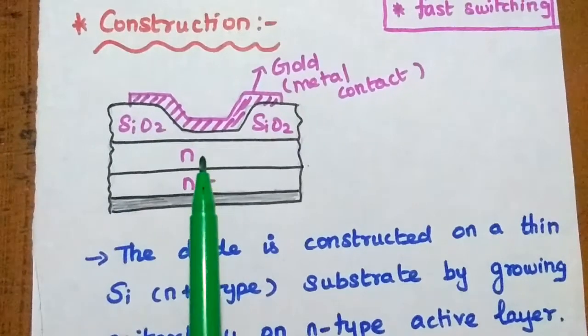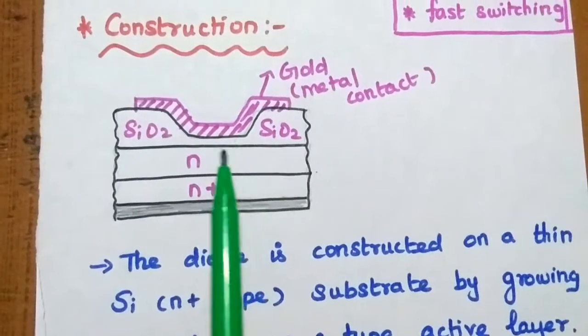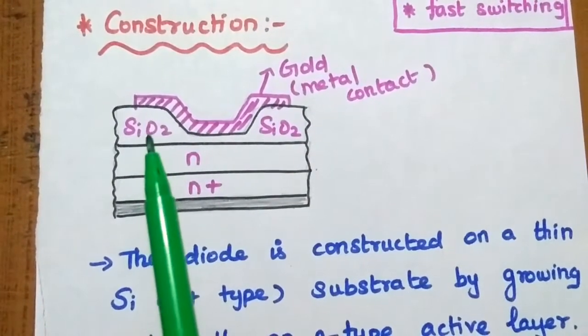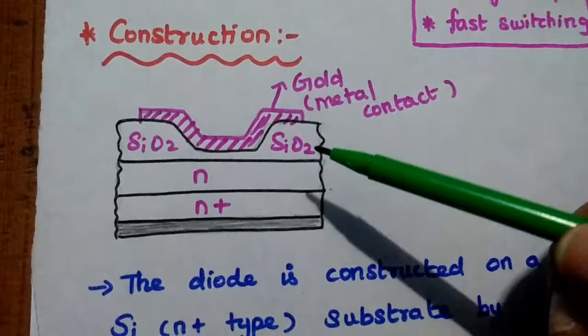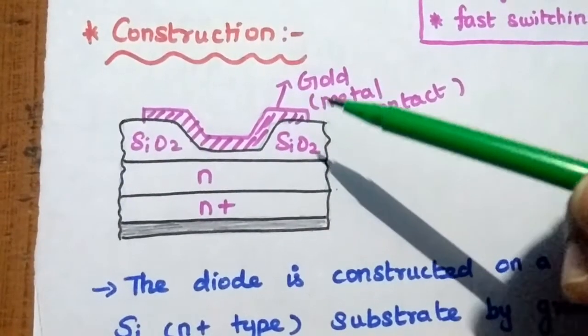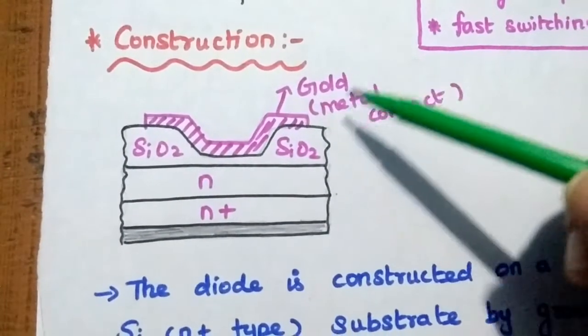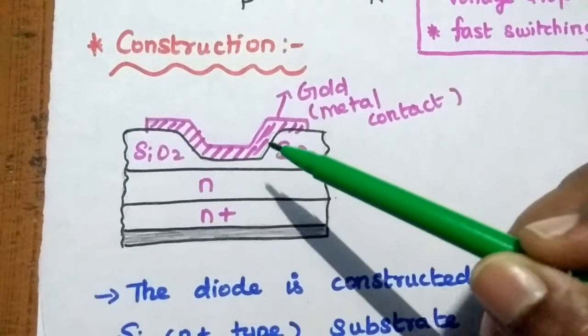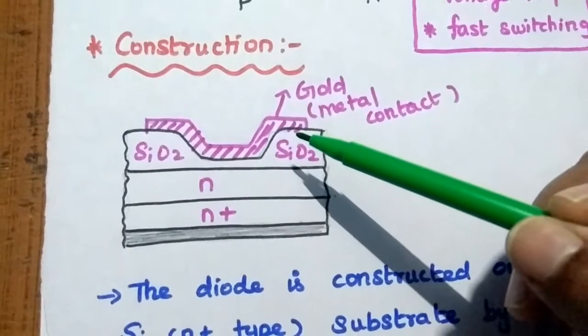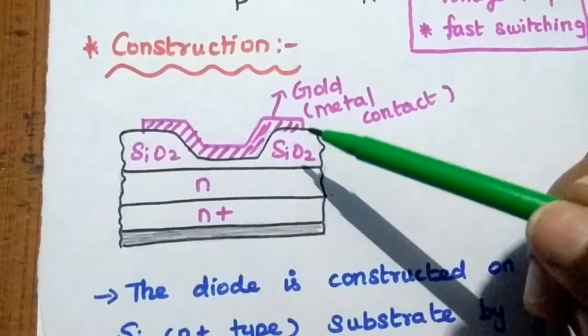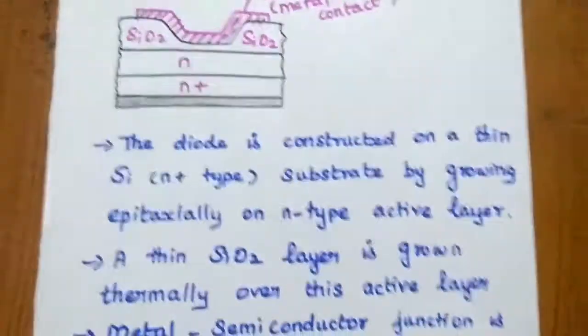Then we are having a normal N-type layer. After this, silicon dioxide. We are having a metal contact. Here maximum we are going to use gold metal. So here that gold is deposited on the silicon dioxide.